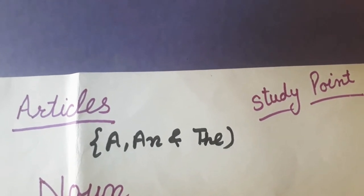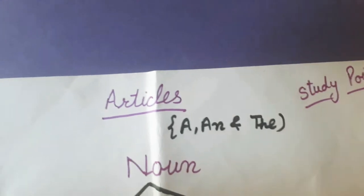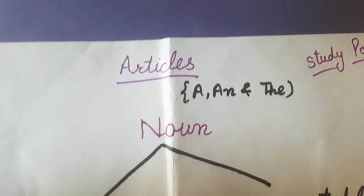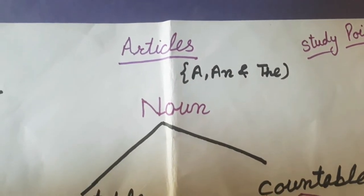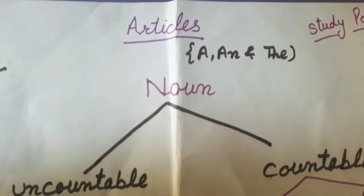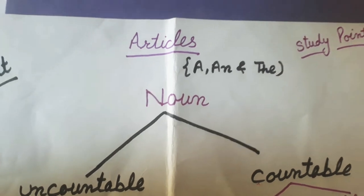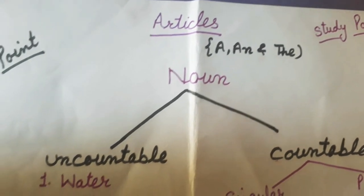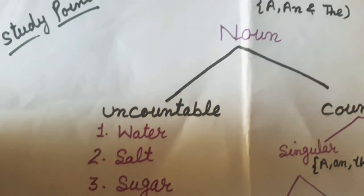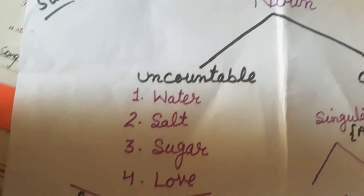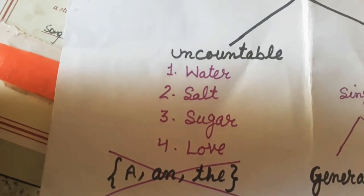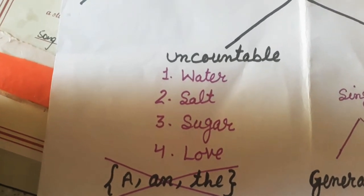Hope you are familiar with noun. We can divide noun in two parts. First, uncountable noun and second, countable noun. Uncountable nouns are the nouns which we cannot count. For example, water, salt, sugar, love.